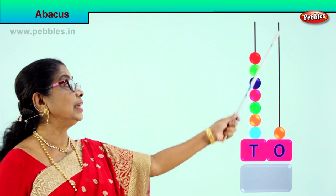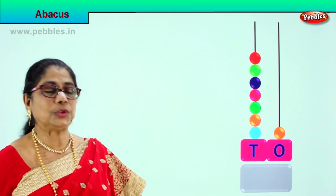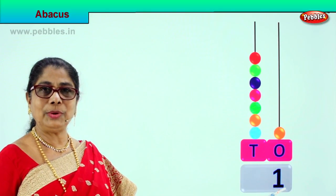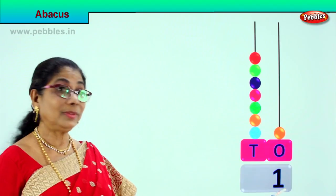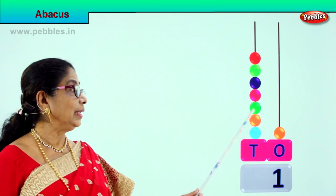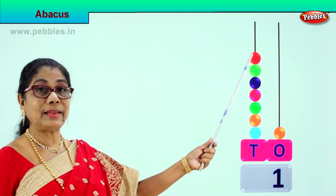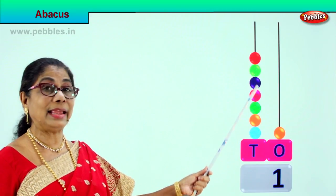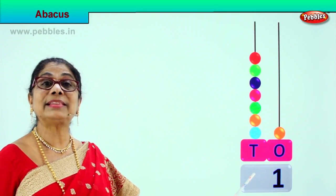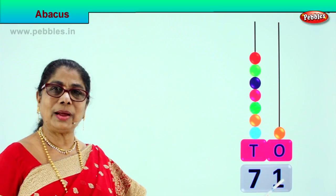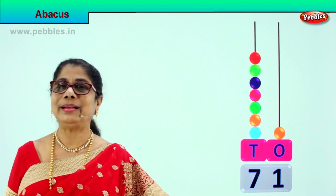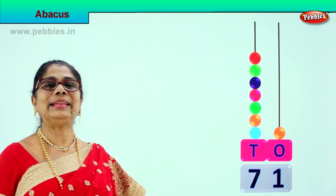In the ones place we have just one single bead — which means we write one. That is one one. And in the tens place, let's count in tens: 10, 20, 30, 40, 50, 60, 70 — one ten, two tens, three tens, four tens, five tens, six tens, seven tens. There are seven beads, so we write seven. Seven tens and one one is seventy-one. Did you enjoy?